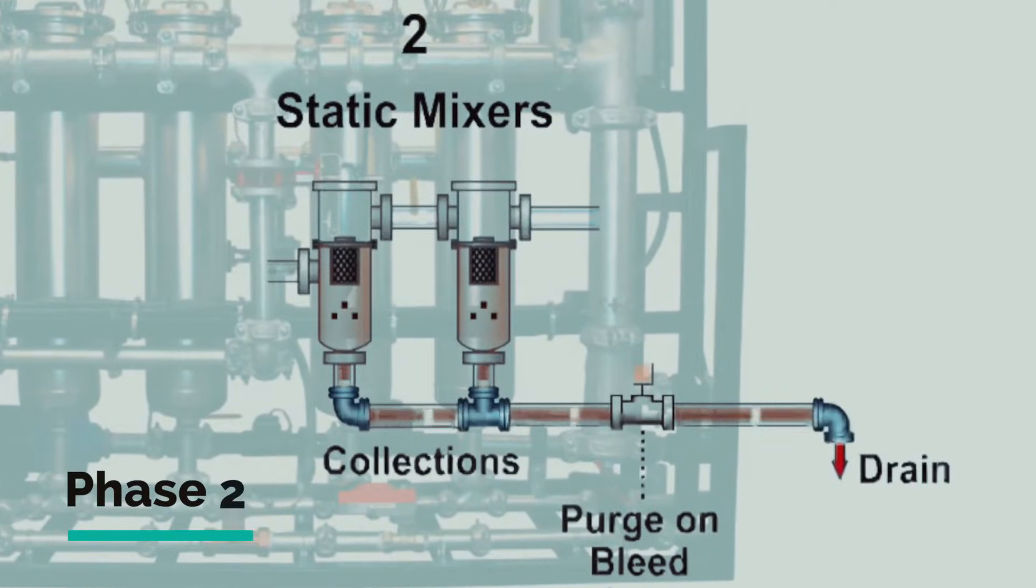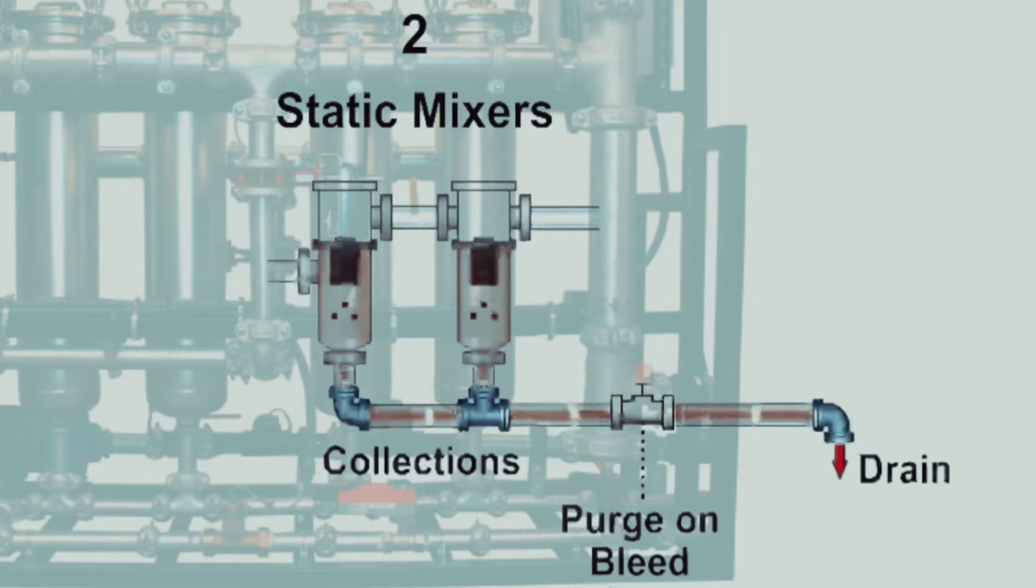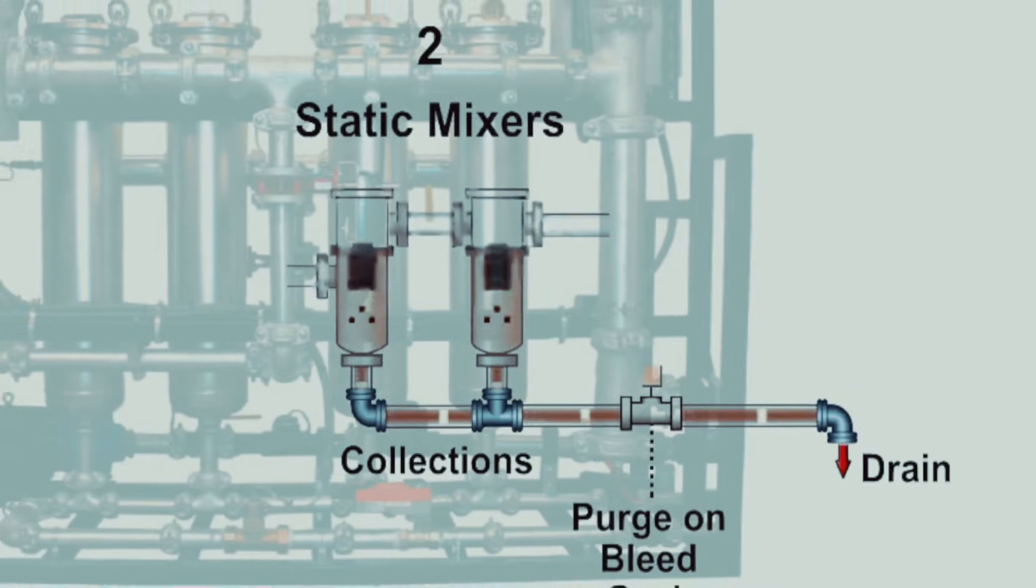Phase two is the static mixer debris removal process. The smaller suspended particles have now grown larger to a critical mass, causing them to precipitate into static mixers by gravity. These coagulated solids precipitate through a steel mesh media to the bottom of the static mixer vessels and are later purged to drain during regular system bleed cycles.